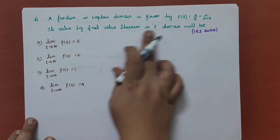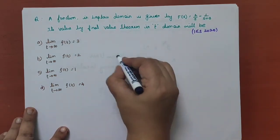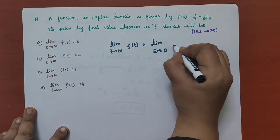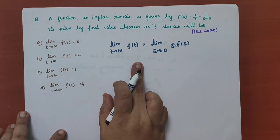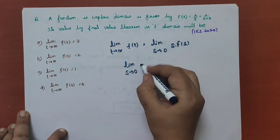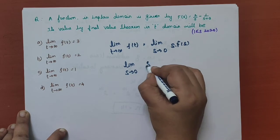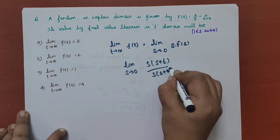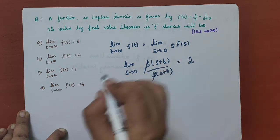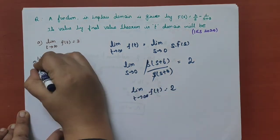Next question: a function in the Laplace domain is given by F of S. Its value by the final value theorem in the time domain is asked. According to the final value theorem: limit T tends to infinity of F of T equals limit S tends to 0 of S times F of S. When you substitute and simplify F of S, you get S times (S plus 6) divided by S times (S plus 3). Applying the limit as S tends to 0, the result equals 2. So limit T tends to infinity of F of T equals 2.